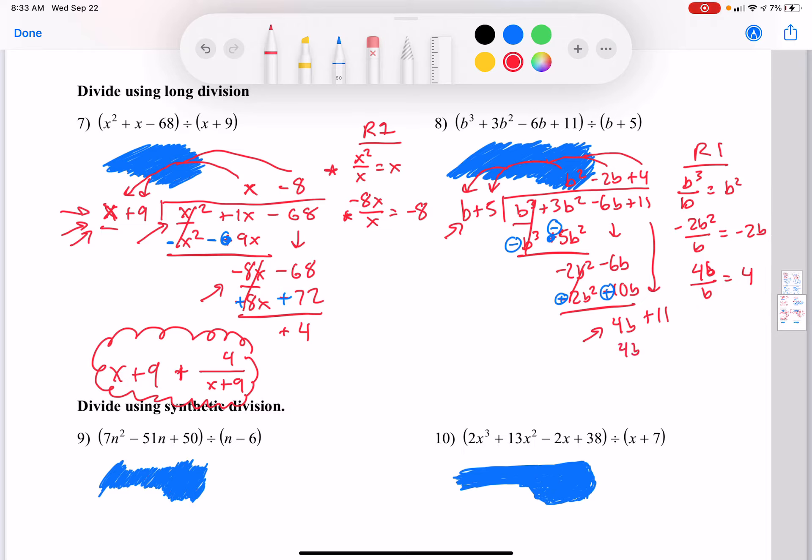4 times b is 4b, 4 times 5 is 20, and I change the signs. Then that cancels, and 11 minus 20 is negative 9. So your final answer is b squared minus 2b plus 4 minus 9 over b plus 5.